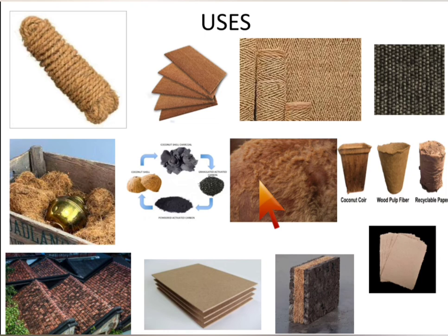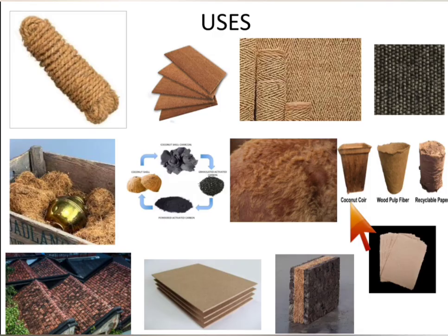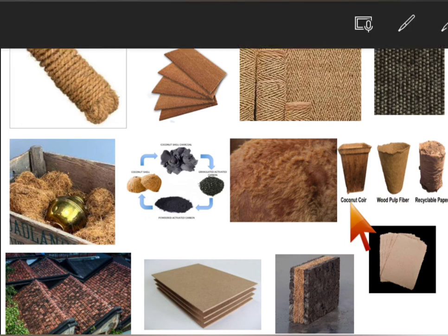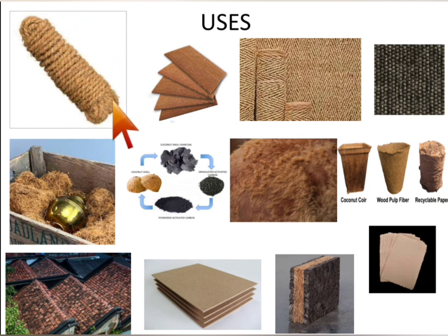While all parts of the coconut plant are useful, here we focus only on the coir. Coir fiber has natural resilience, toughness, durability, and resistance to water. Therefore it is very useful in making cordages and is extensively used in the manufacture of mats, matting, and coarse cloth woven from this coir fiber.